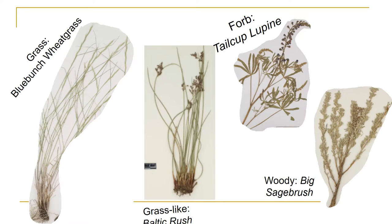Just four examples: grasses, of course, are those long stemmy plants that you probably know. Grass-like plants are pretty well named — they look like grasses. Forbs — here's an example of tailcup lupine — and woody plants such as big sagebrush. So let's start with grasses.